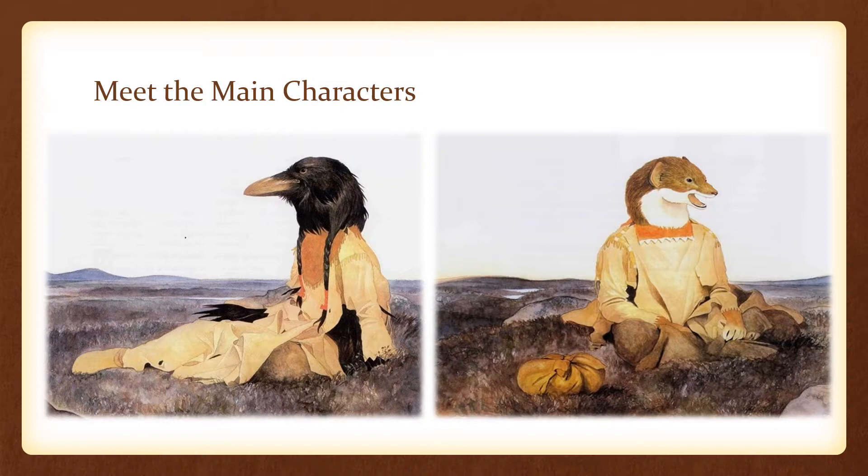This is where we meet the main characters of our story, Crow and Weasel. We also meet Mouse, and the forest in the story also plays a role as one of the characters in this short section that we read from pages 1 through 32.